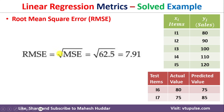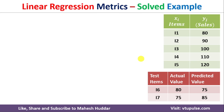The third metric is Root Mean Squared Error. We have already calculated the Mean Squared Error, so we simply take the square root of 62.5, which gives us the RMSE equal to approximately 7.91.